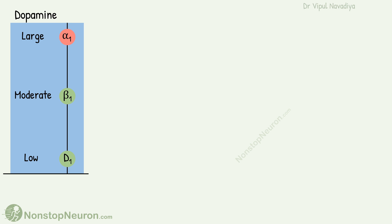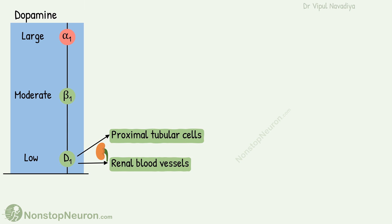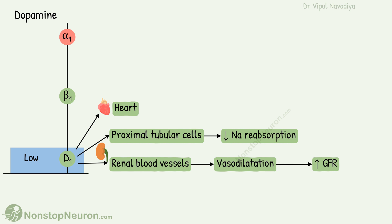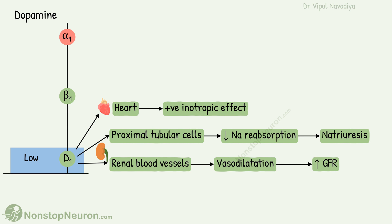The D1 receptors are found on renal blood vessels, proximal tubular cells, and the heart. Even a low dose of dopamine stimulates these receptors. When stimulated, the receptors in renal blood vessels cause vasodilation of renal vessels, increasing the glomerular filtration rate. The receptors in proximal tubular cells decrease sodium reabsorption, increasing sodium excretion — this is called natriuresis. The receptors in the heart produce a positive inotropic effect.